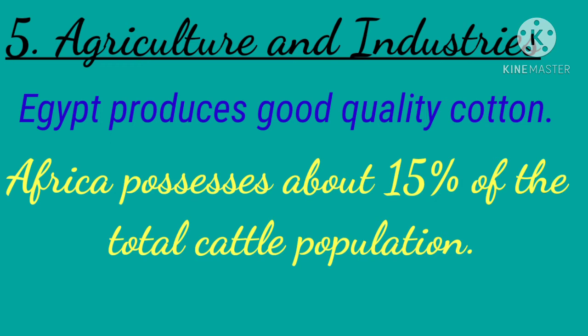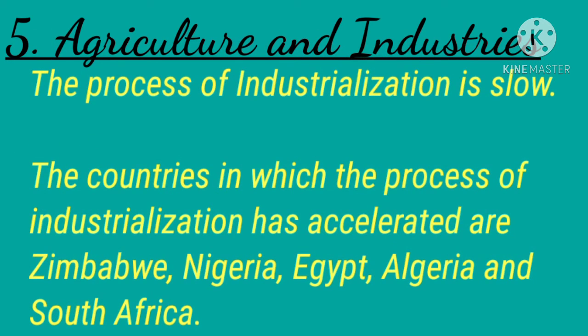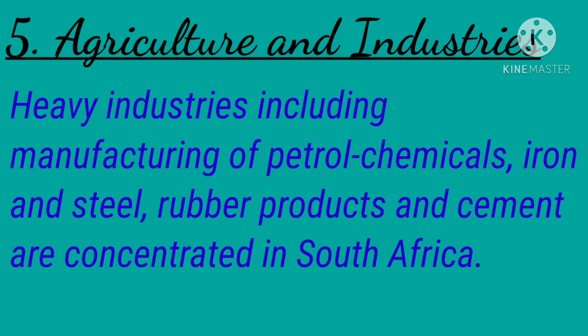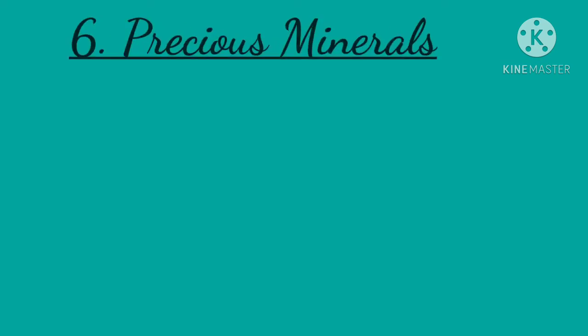Africa possesses about 15 percent of the total world cattle population. The continent is rich in water, forest, and mineral resources, but their distribution is not uniform. The process of industrialization is slow; countries where it has accelerated include Zimbabwe, Nigeria, Egypt, Algeria, and South Africa. Heavy industries including petrochemicals, iron and steel, rubber products, and cement are concentrated in South Africa. Reasons for backwardness include insufficient capital, illiteracy, tribalism, political turmoil, and unskilled labor.